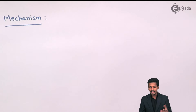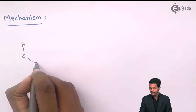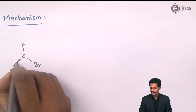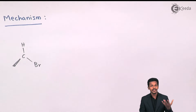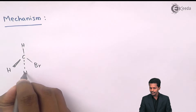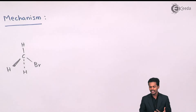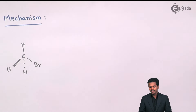Let us draw the structure of methyl bromide. This is not the accurate flat structure — in actual practice, carbon is under sp3 hybridization and therefore has tetrahedral geometry. To represent this on a 2D page: two hydrogens and the bromine are on the plane, one hydrogen is above the plane, and one is below the plane.